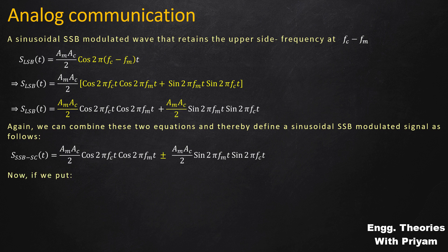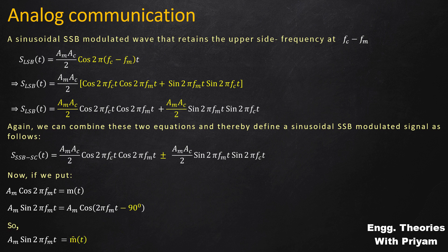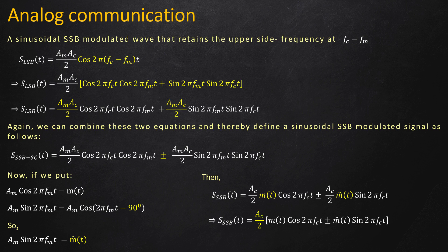We have defined Am·cos(2π·fm·t) = m(t). Also, Am·sin(2π·fm·t) = Am·cos(2π·fm·t − 90°), which is the 90-degree phase-shifted version of the cosine signal — that is, the Hilbert transform of m(t). So Am·sin(2π·fm·t) = m̂(t). Substituting into the SSBSC equation gives (Ac/2)·[m(t)·cos(2π·fc·t) ± m̂(t)·sin(2π·fc·t)], which matches the SSBSC signal generated by the Hilbert transform method, with amplitude scaled by Ac/2.